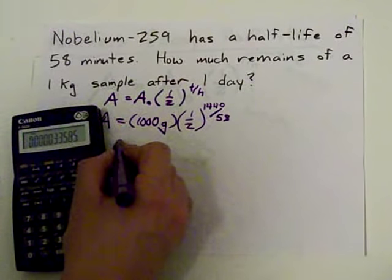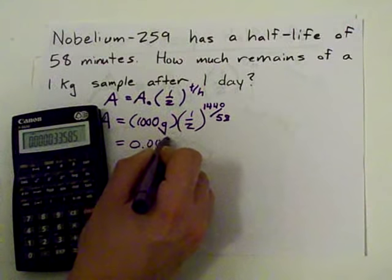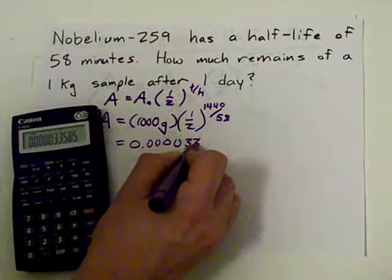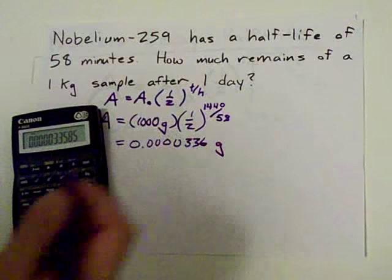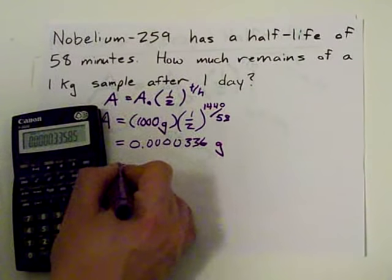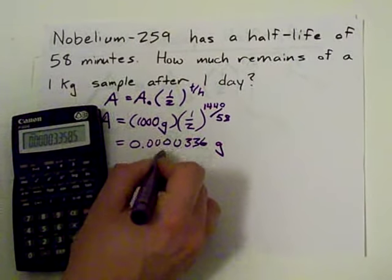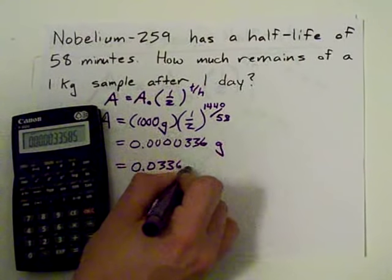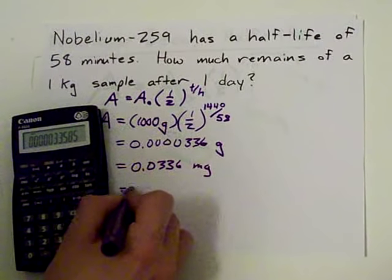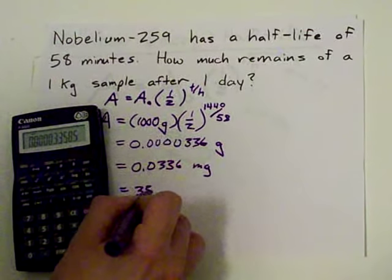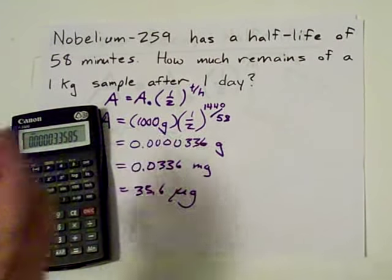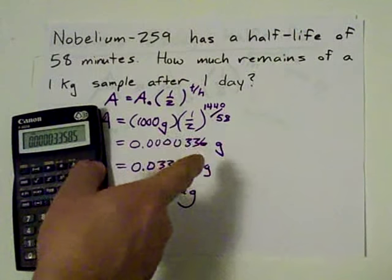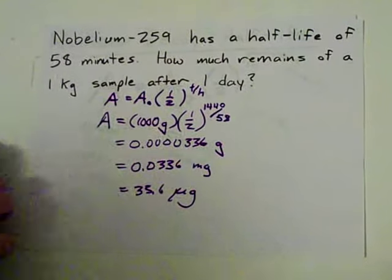So, the answer we get is 0.0000336. And I used grams, so this is in grams. If I was going to convert that, it would be 0.0336 milligrams or 33.6 micrograms. I don't really care if you can do the conversion. I care that you can use this formula properly. Practice it. Do it. Exponent first. Times next.